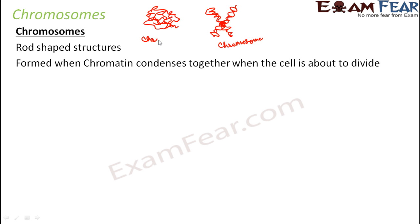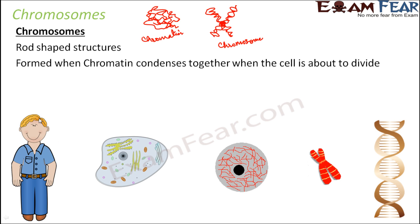When you look at any organism, such as human beings, their body is made up of cells. If you look at any one particular cell, you can see the nucleus. Inside the nucleus you will have small thread-like structures called chromatin. These chromatin later condense together to form chromosomes.